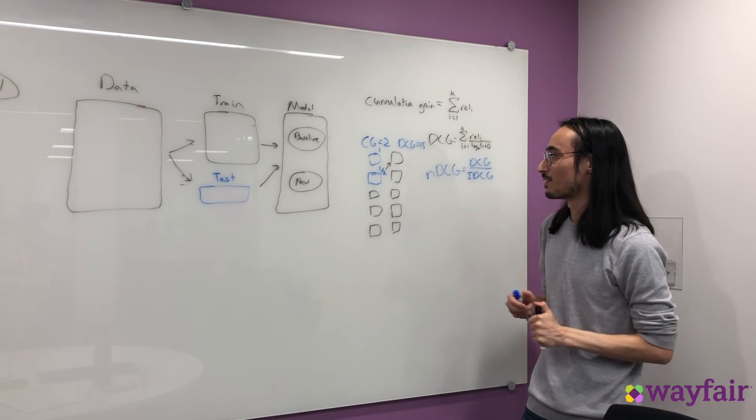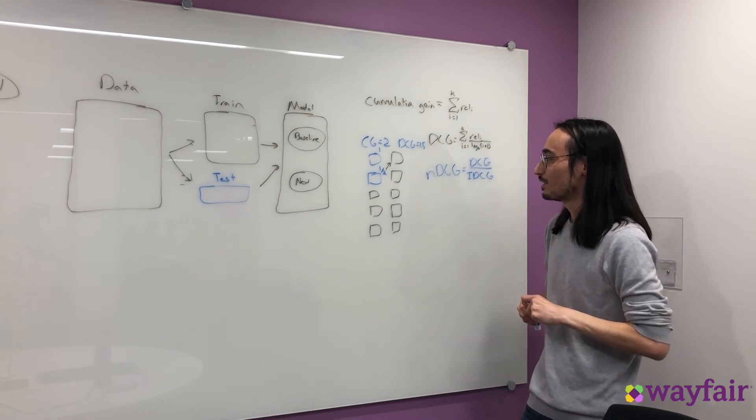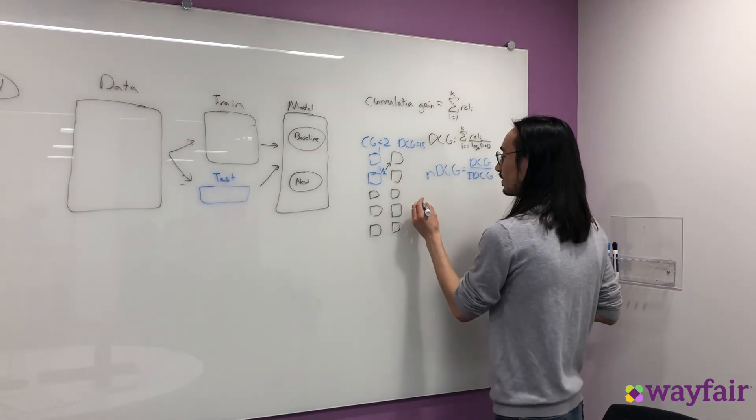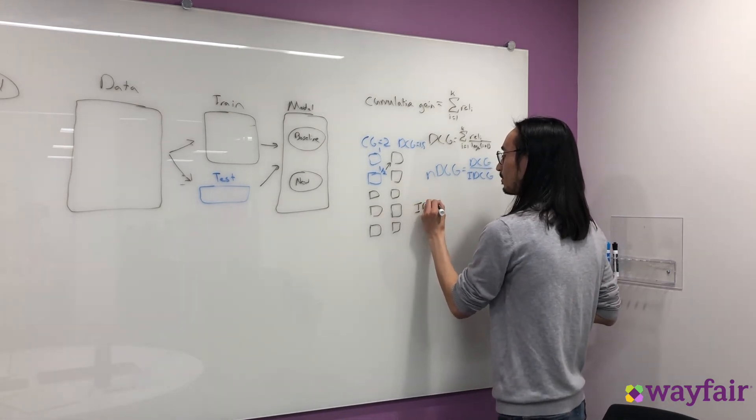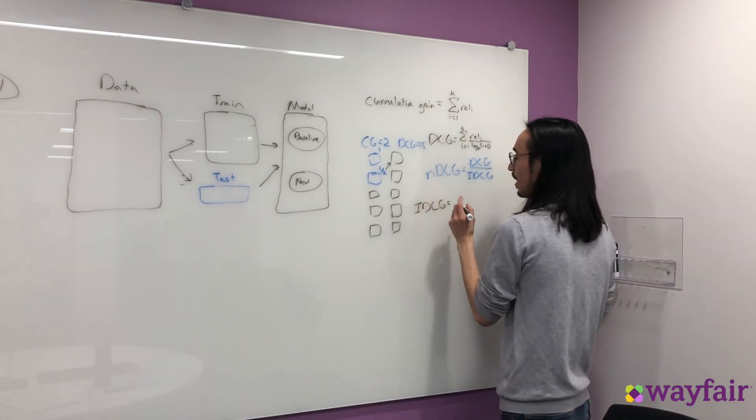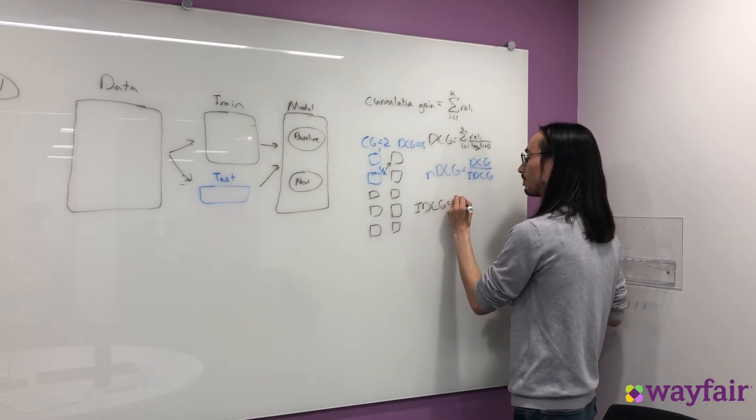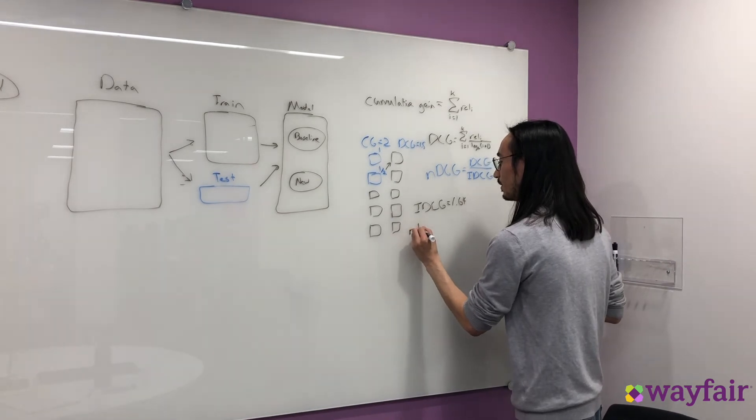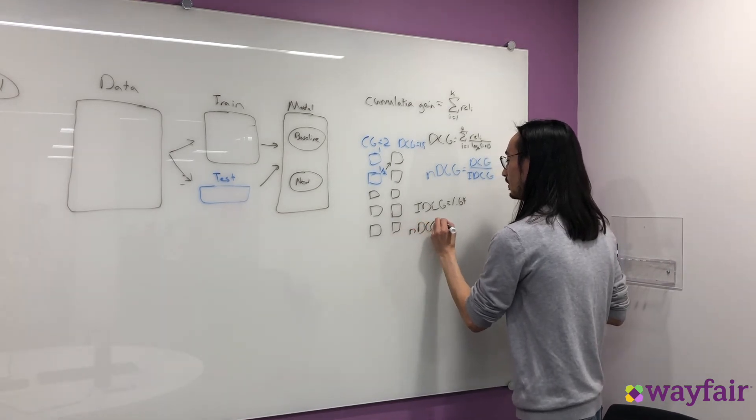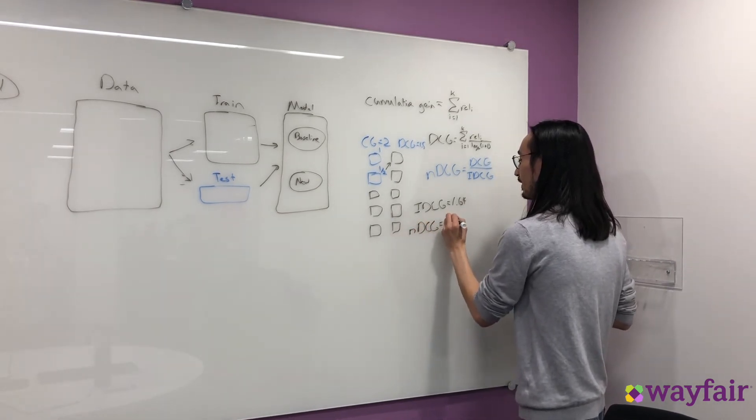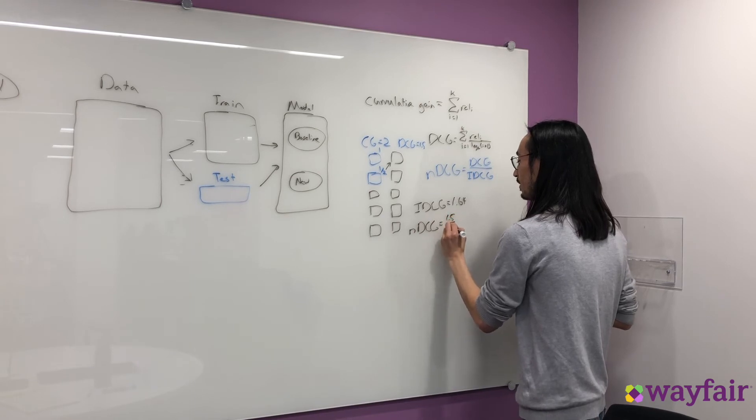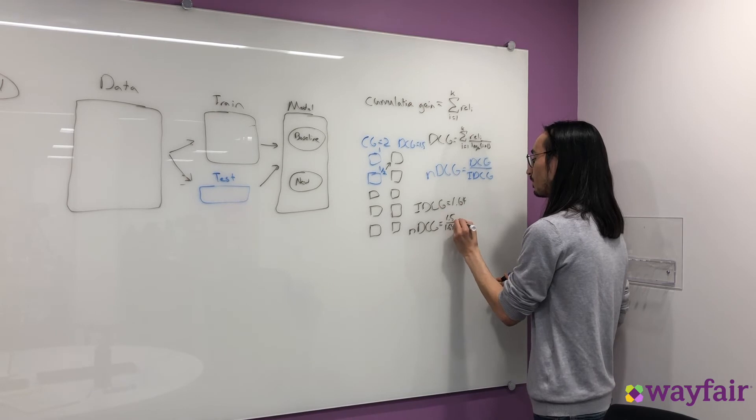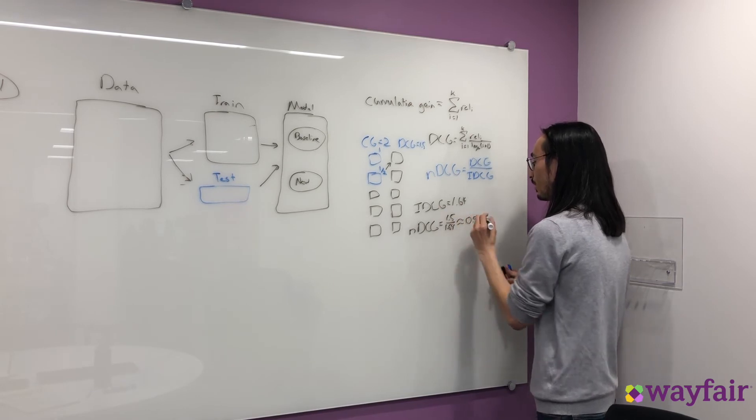When you do the math behind this, you find that the DCG for the perfect sort is approximately 1.64. So that means when we run NDCG, we get the value 1.5 divided by 1.64, which is approximately 0.9.